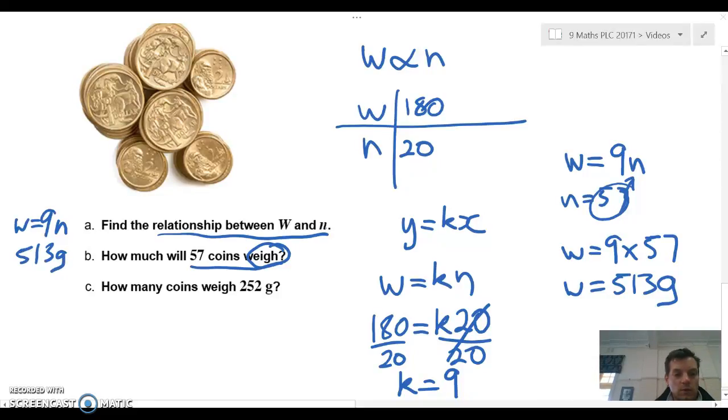The next question asks us, how many coins weigh 252 grams? So again, we can use our formula that we've created, w equals 9n. Now this time our w equals 252, and n is going to be the number of coins we need to find. We're going to divide by 9.